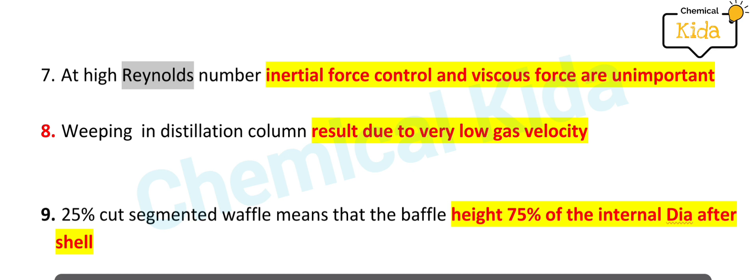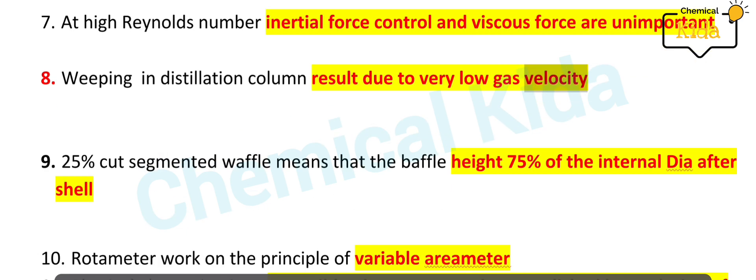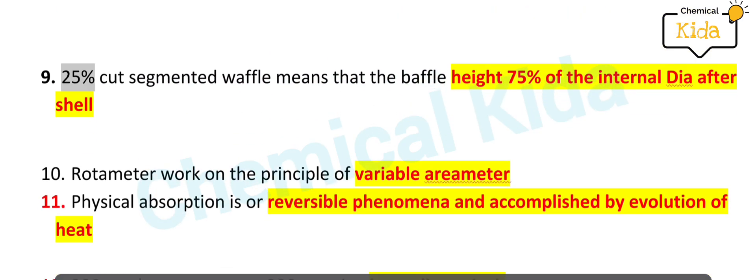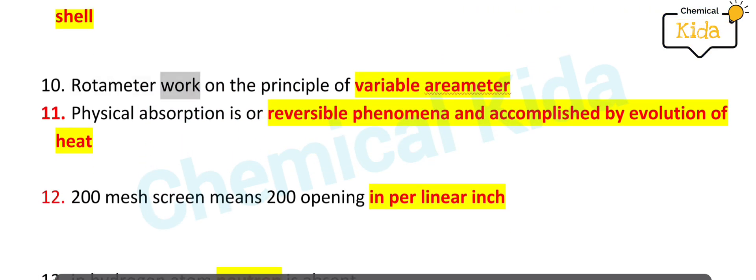At high Reynolds number, inertial force control and viscous forces are unimportant. Weeping in distillation column results due to very low gas velocity. 25 percent cut segmented baffle means that the baffle height is 75 percent of the internal diameter of the shell. Rotometer works on the principle of variable area meter.